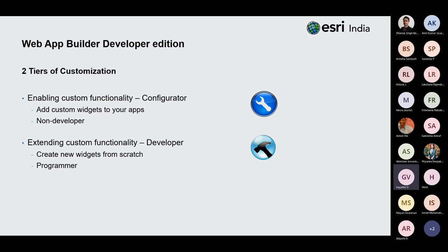Now let's see the developer edition. There are two types of users: if you are not a developer, you are probably a configurator who can take custom widgets and leverage them in the developer edition. Alternatively, if you are a developer, you write custom code. Using ArcGIS API for JavaScript, you can create new widgets from scratch or customize existing widgets.